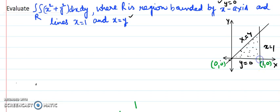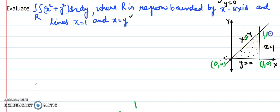The third intersection is between the line x equals y and x equals 1. If you plug in x equals 1, you get y equals 1 as well, so the point is (1, 1). These can all be easily seen from the diagram and labeled.